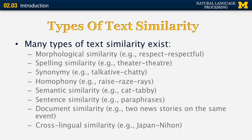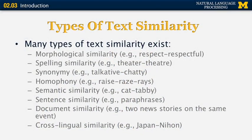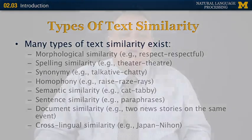Let me describe the different kinds of text similarity that exist. The first kind is morphological similarity. We have two words such as 'respect' and 'respectful' that have the same stem, but then have some additional morphological change. In this particular example, 'respectful' is an adjective derived from 'respect', and the suffix '-ful' tells us that it's an adjective, but the two words are morphologically very similar and share pretty much the same meaning. The next example is spelling similarity, which can be useful in dealing with different dialects of English. For example, in British and American English, the word 'theater' can be spelled with either ER or RE at the end, and we want a system to understand those are pretty much the same word.